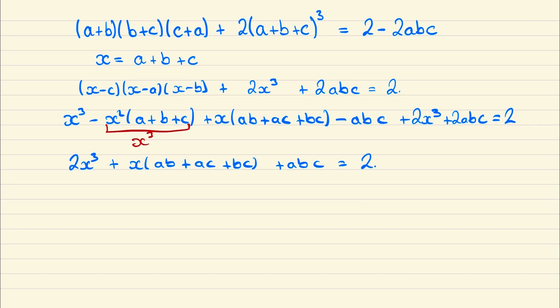Now the next step is a little bit subtle, but if we take this 2x cubed and write it as x cubed plus x squared times a plus b plus c, then what you might notice now is that we can factorize this entire equation as x plus a, x plus b, and x plus c is all equal to 2.